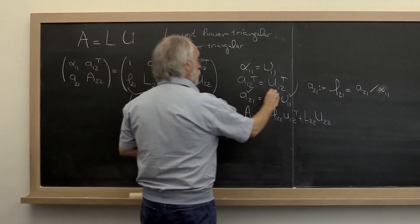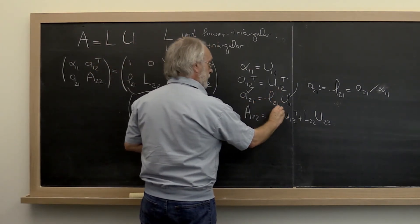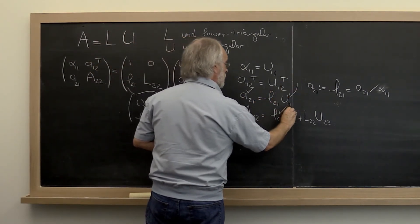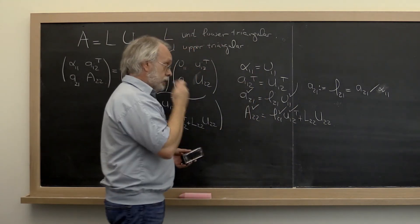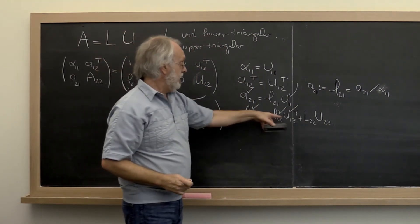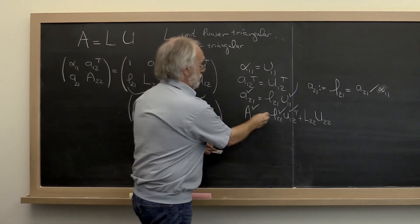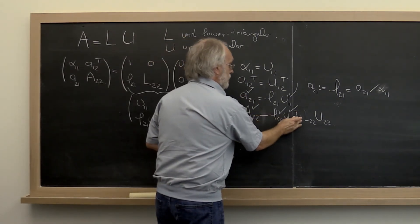So now we know what L 2 1 is. We know what U 1 2 is. We know what A 2 2 is.